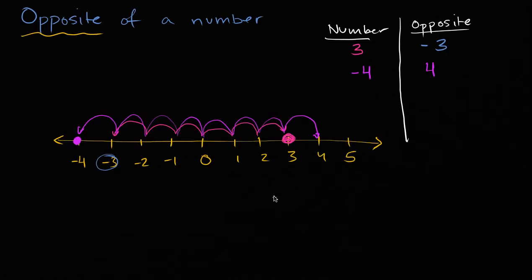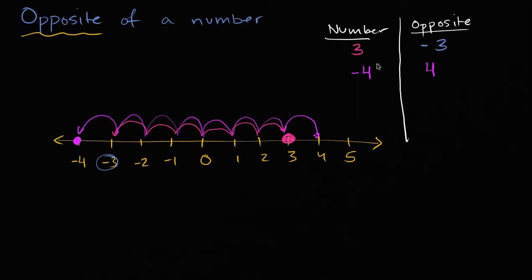And so you're probably starting to see a pattern here. The opposite of a number is going to be the opposite sign of that number. If you have positive three, its opposite is negative three. If you start with negative four, its opposite is positive four. One way to think about it: it's going to have the same absolute value but a different sign. Or another way to think about it: if a number is three to the right of zero, its opposite is three to the left of zero. Or if the number is four to the left of zero, its opposite is four to the right of zero.